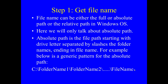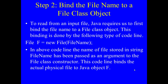How we actually do it in the code, we are going to show you when we do the code in a clip. Step two is to bind this file name to a file class object. Java requires us to first bind the file name to a file class object. The binding code is: File f = new File(fileName); where fileName is a string containing the absolute path. Once this line is executed, it binds the actual physical file to the Java object F.